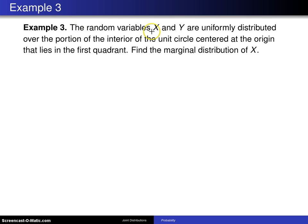The random variables x and y are uniformly distributed over the portion of the interior of the unit circle centered at the origin that lies in the first quadrant. Find the marginal distribution of x.